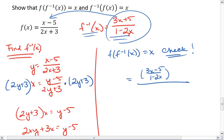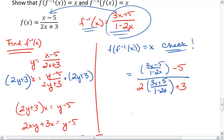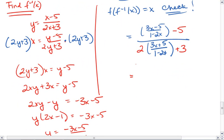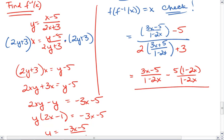Actually, we'll keep the f inverse in blue. Minus 5, and then 2 times 3x plus 5, 1 minus 2x plus 3. Alright, we go through some algebra magic here. We get 3x minus 5, 1 minus 2x minus 5 times 1 minus 2x over 1 minus 2x all over. Let's distribute that 2. So we get 6x plus 10 over 1 minus 2x plus 3 times 1 minus 2x over 1 minus 2x.